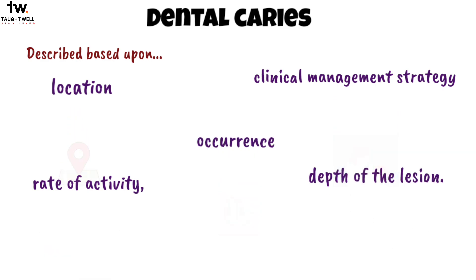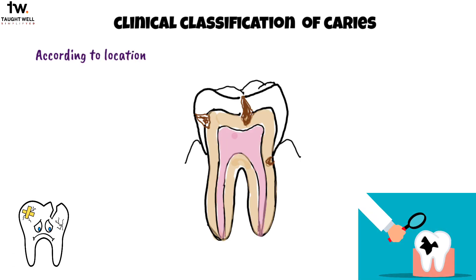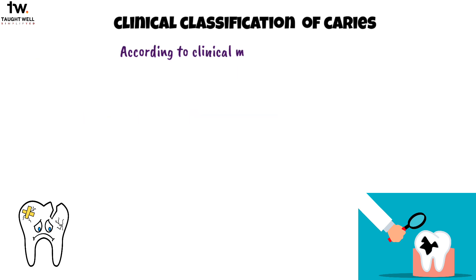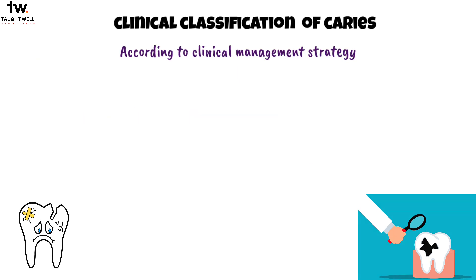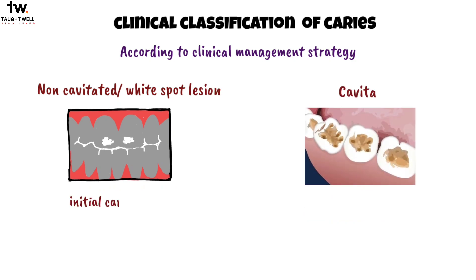Let's look at the clinical classification of caries. According to location, caries can be pit and fissure caries, smooth surface caries, and root caries. According to clinical management strategy, we have initial caries lesion or white spot lesion and cavitated caries lesion.